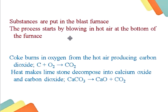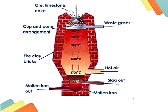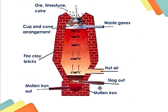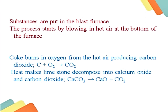Substances are put into the blast furnace from the top. The process starts by blowing hot air at the bottom of the furnace. Coke burns in oxygen from the hot air, producing carbon dioxide: C + O2 → CO2. Heat also makes limestone decompose into calcium oxide and carbon dioxide.